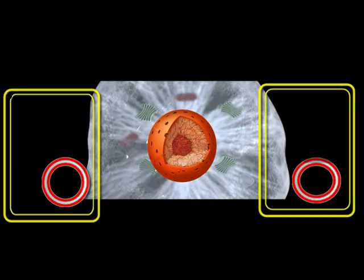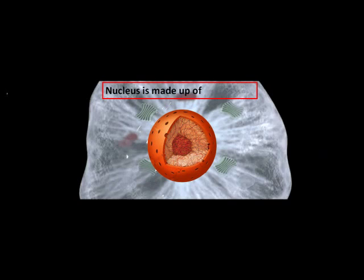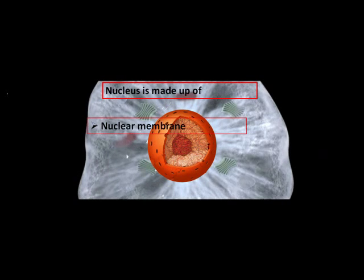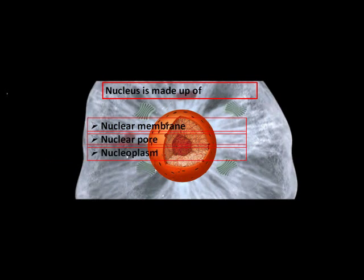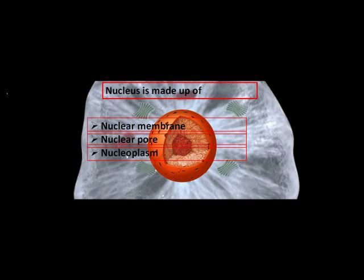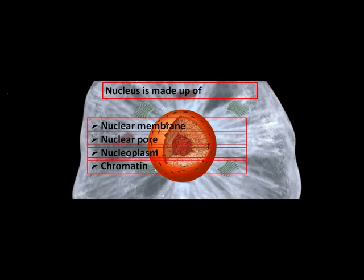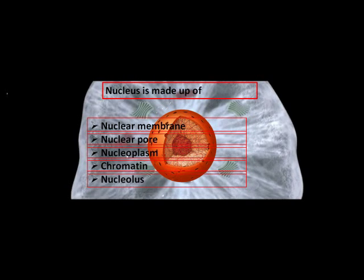The nucleus is made up of nuclear membrane, nuclear pore, nucleoplasm, chromatin, and nucleolus.